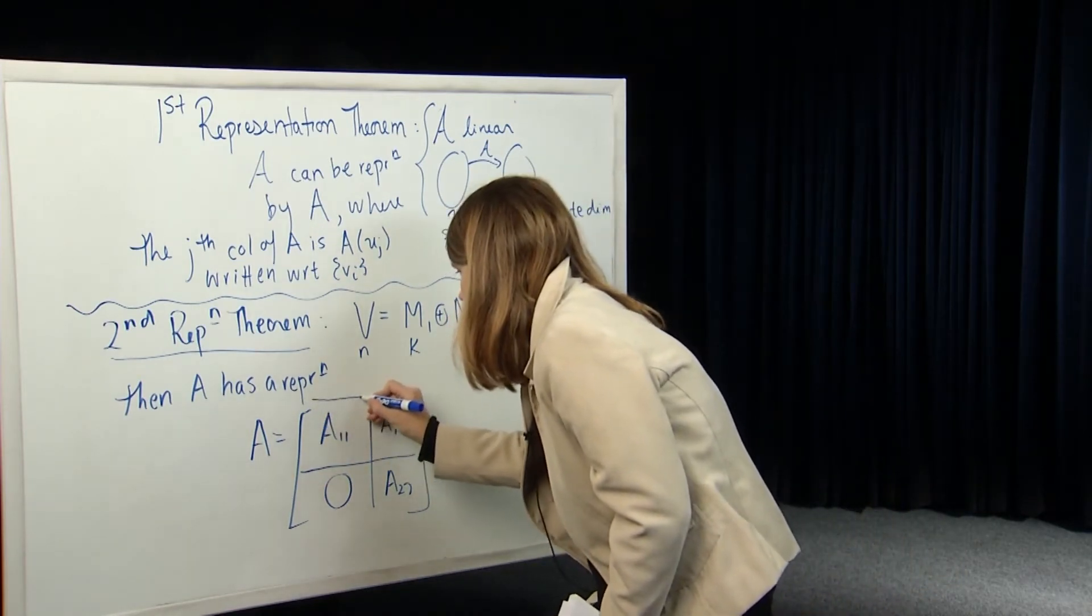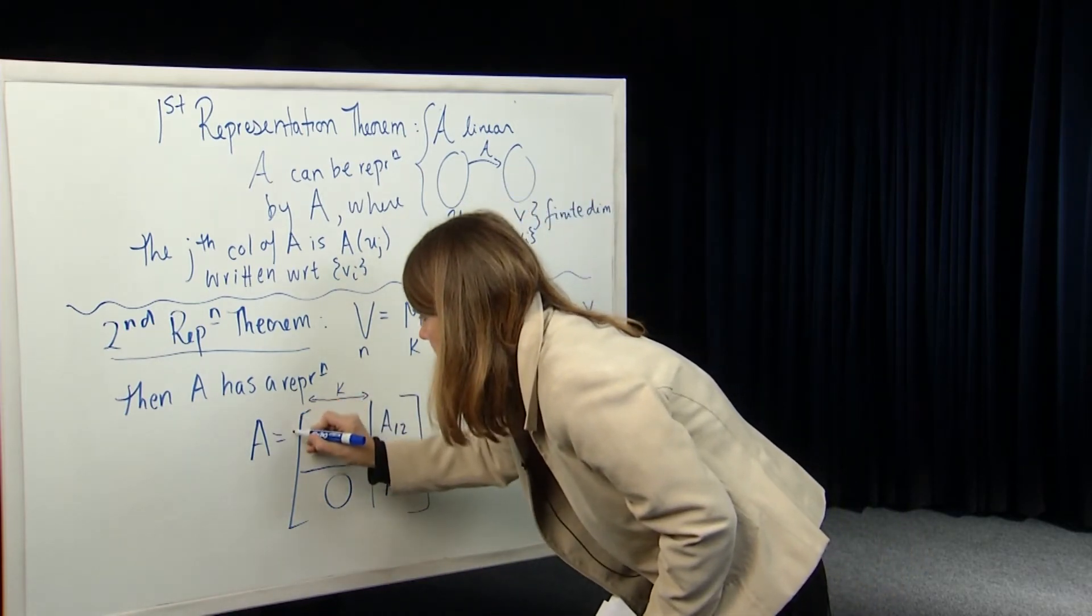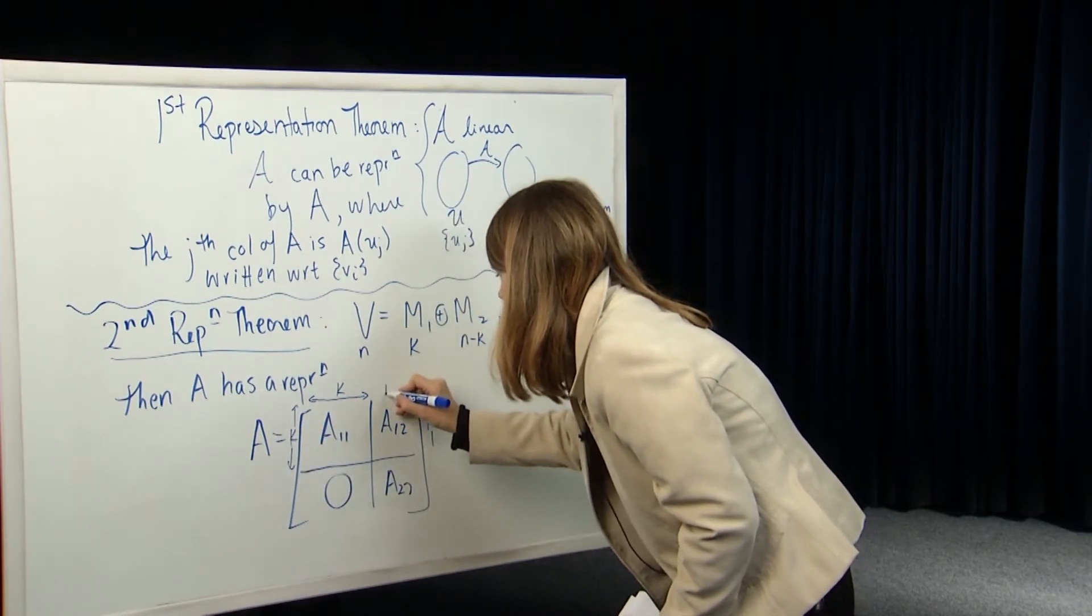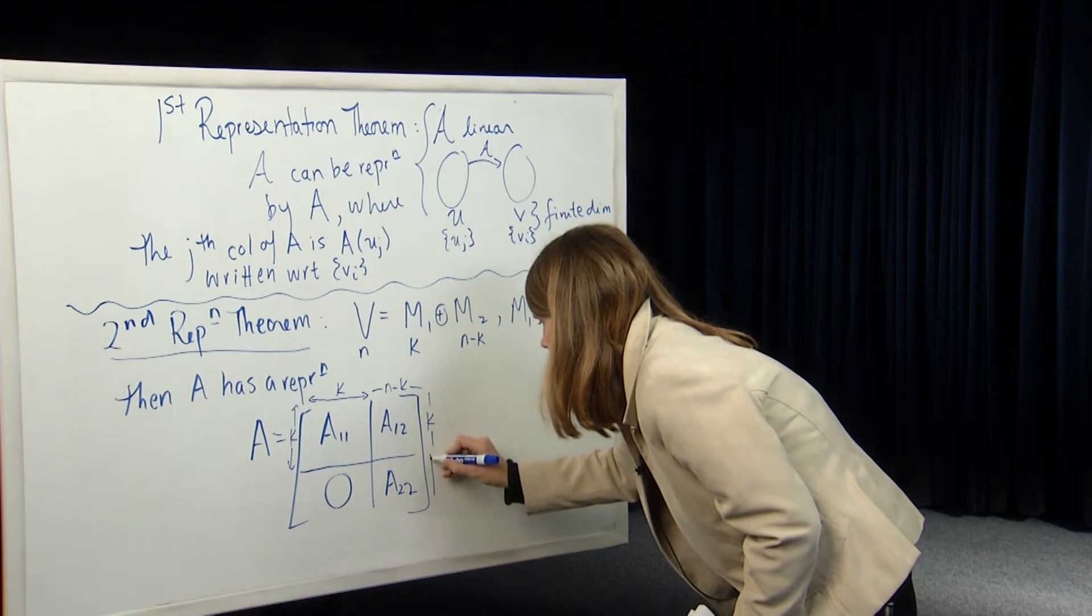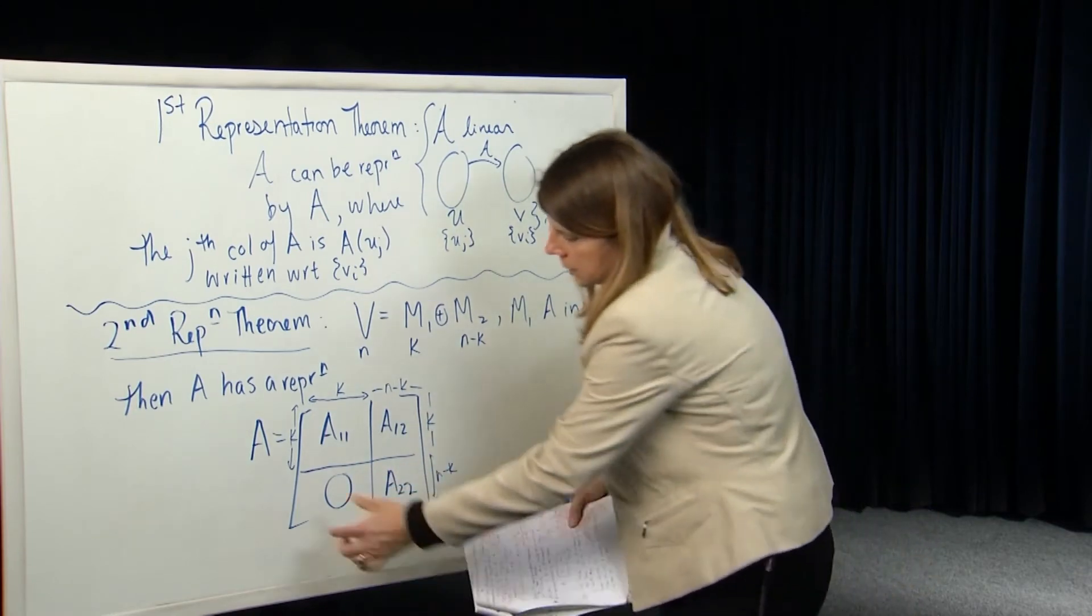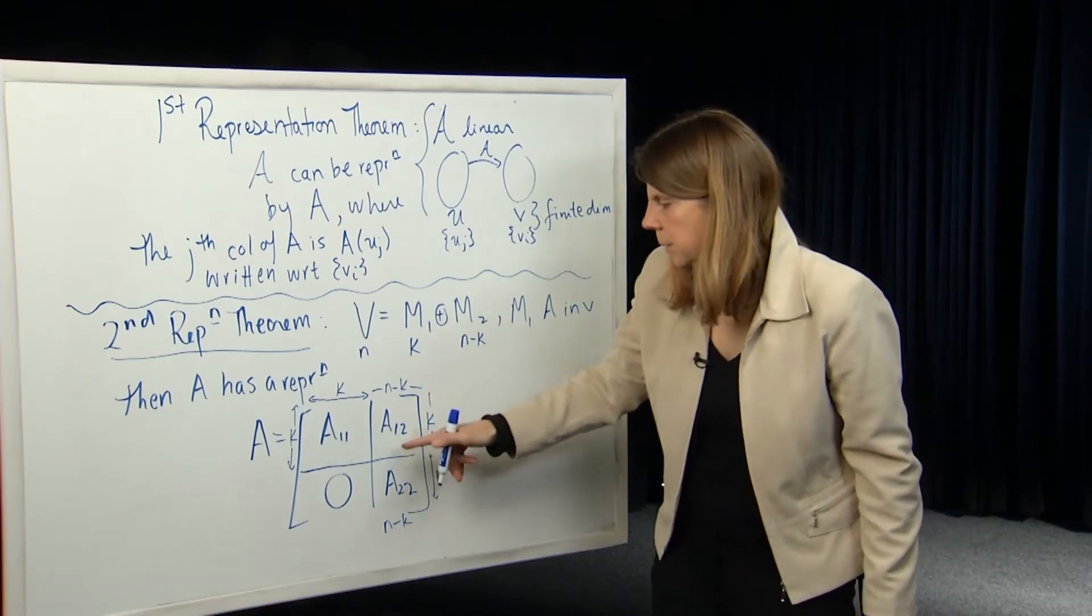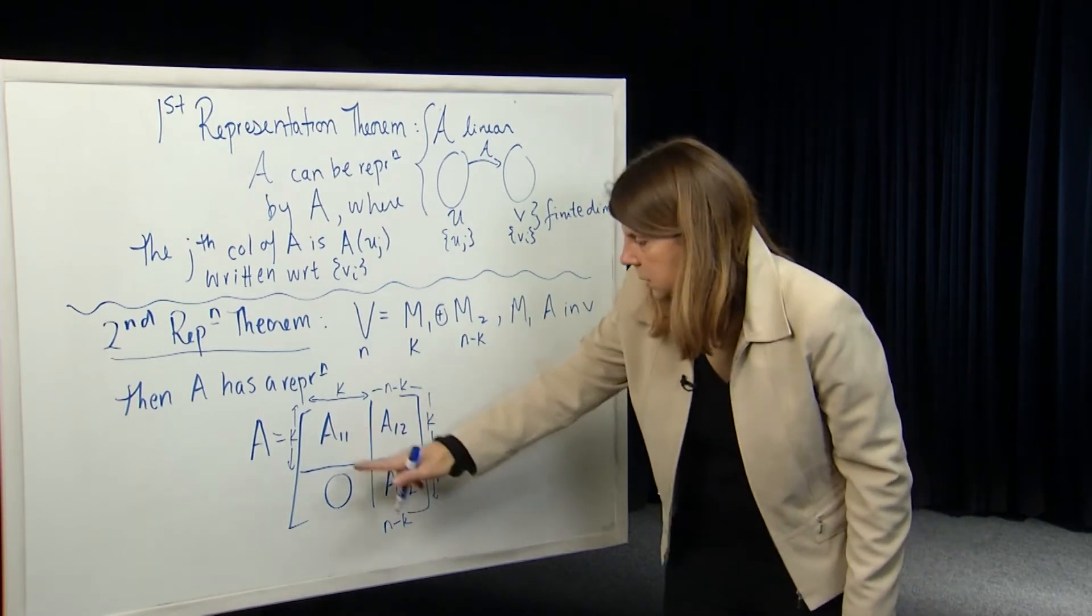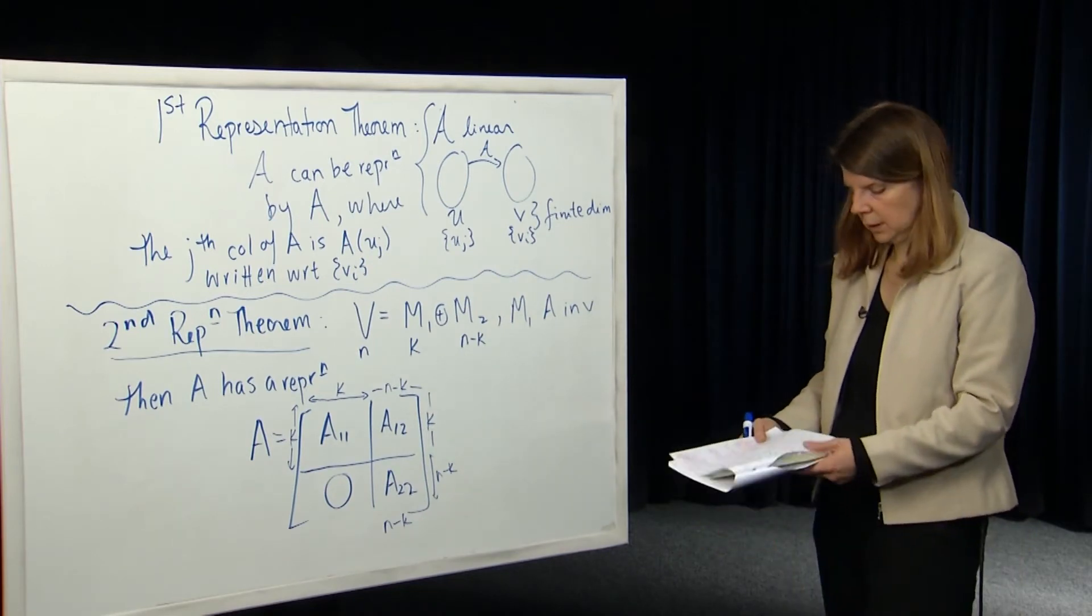And the dimensions of these blocks are as follows. So A11 is K by K. A12 has K rows and N minus K columns. And then A22 is N minus K by N minus K. And then this zero is going to be an N minus K row by K column matrix. So basically the important thing of this theorem is that if M1 is A invariant, then the matrix A can be represented by a matrix which has a zero block down here.